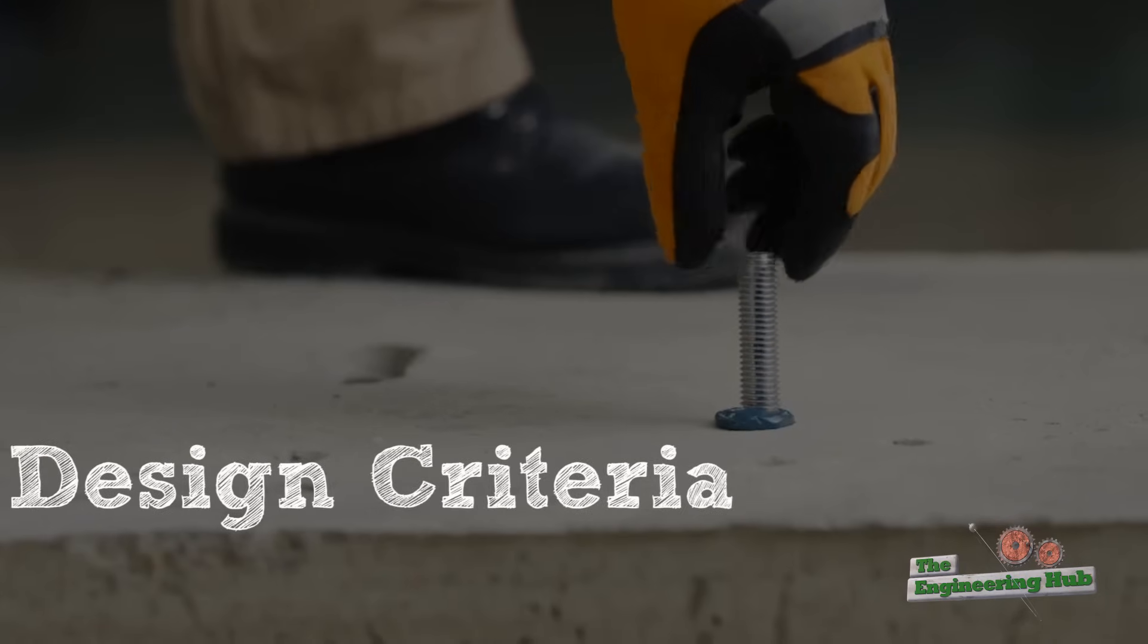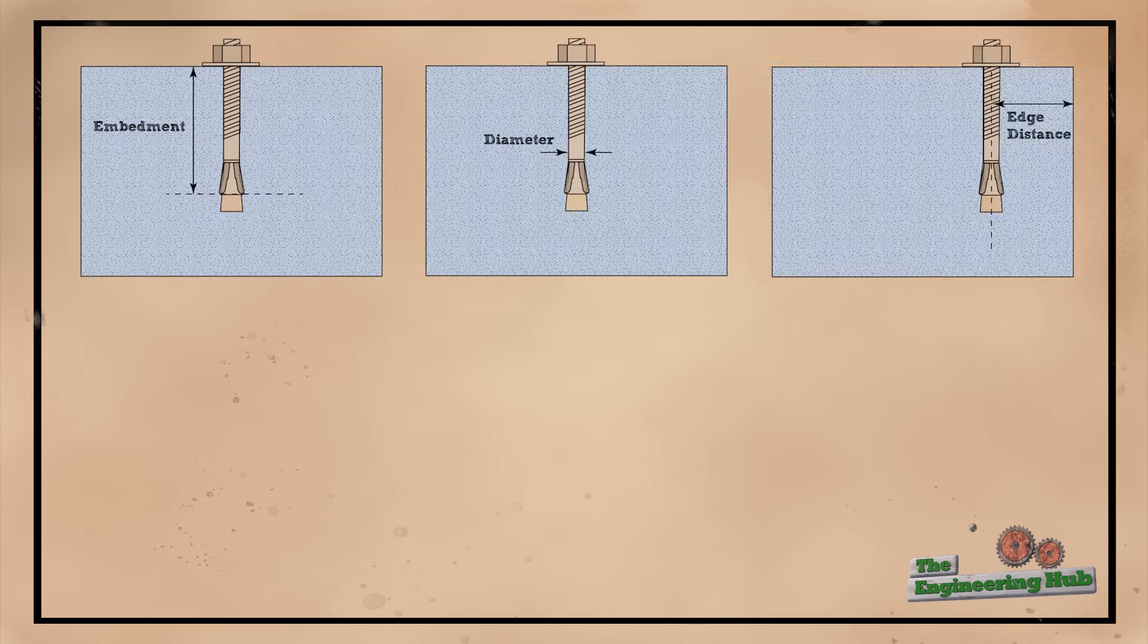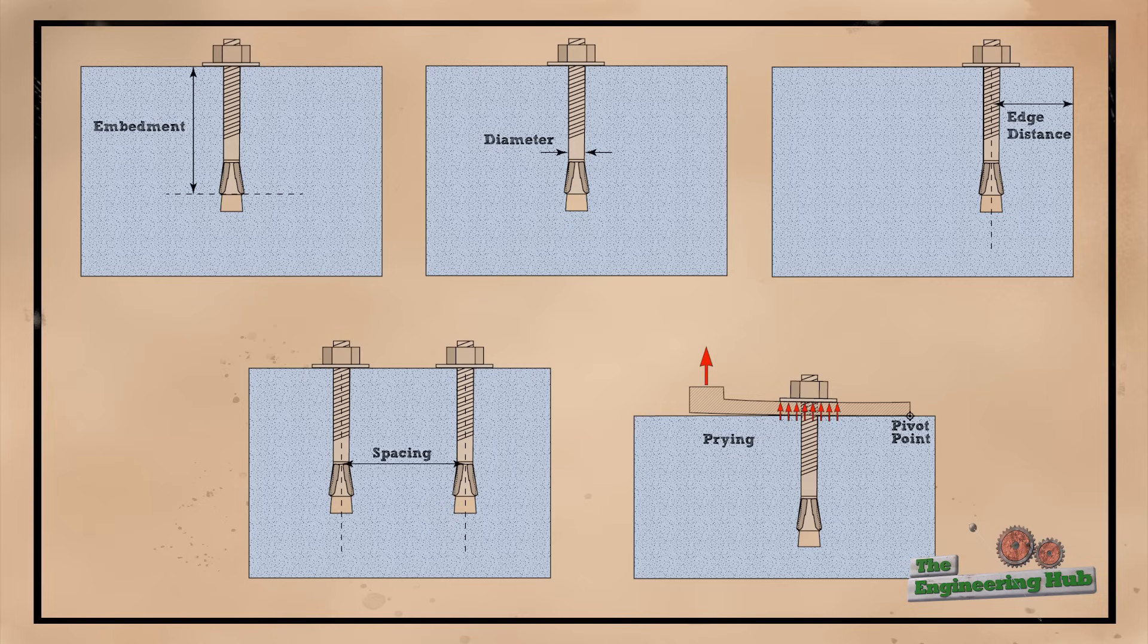The primary design criteria for concrete anchors are embedment, diameter, edge distance, spacing, type-specific parameters such as post-installed wedge size or post-installed epoxy adhesion strength, and prying, which we'll illustrate in a moment here.